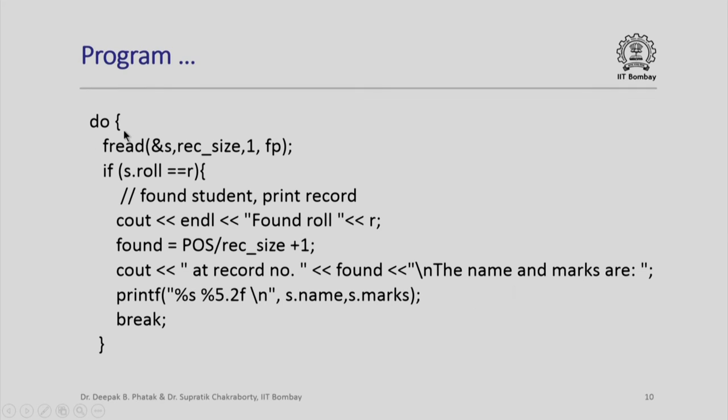I set up a do-while loop. What do I do in the do-while loop? I first read one record in the structure pointer s. Once I got s, I got s.roll, s.marks, s.batch, s.name, everything. I simply check if s.roll is equal to the given r.